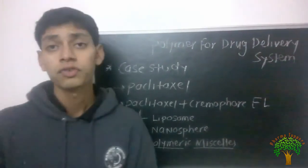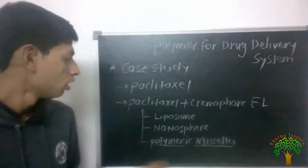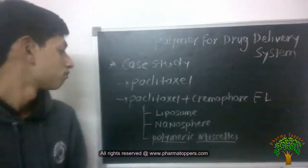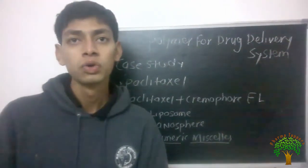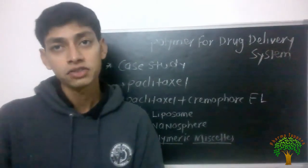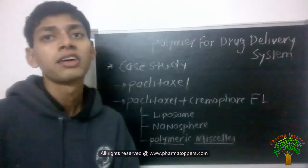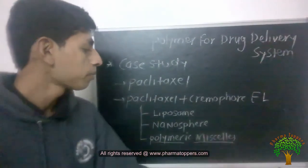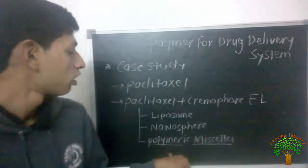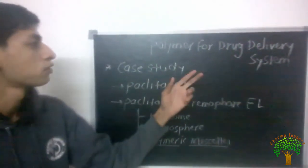Scientists also formulated nanospheres of paclitaxel, but the main drawback with nanospheres is that the entrapment efficiency of paclitaxel is very low compared to other formulations, making it not feasible for reducing toxicity. After all studies, scientists concluded that polymeric micelles are the best option to enhance the bioavailability of paclitaxel, because polymeric micelles have higher entrapment efficiency and drug release follows a pH-dependent profile, making it the most successful formulation for paclitaxel.